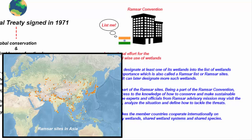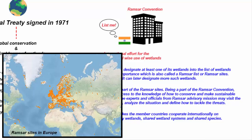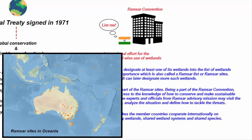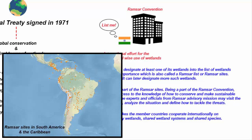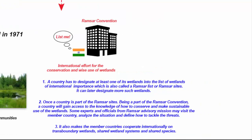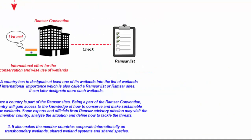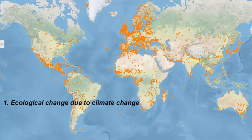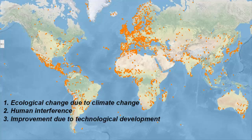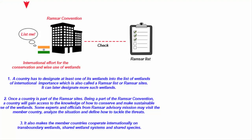One more important thing about the Ramsar Convention is that it keeps a check on all the wetlands in the Ramsar list — meaning, is there any kind of ecological change in the wetlands due to climate change, human interference, or any improvement due to technological development. If there are any notable changes, the convention then updates the record in the Montreux Record.